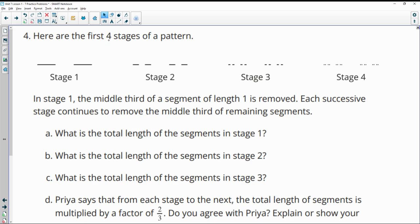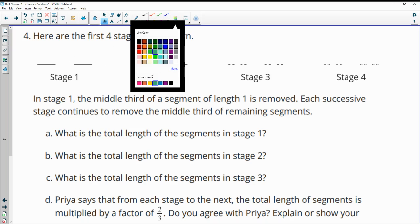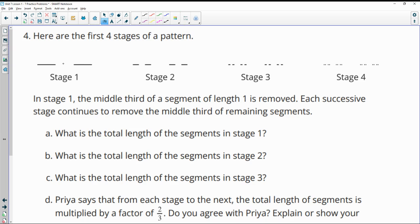Number four, here's the first four stages of a pattern. In stage one, the middle third of a segment length one is removed. Each successive stage continues to remove the middle third of the segment. So we can see that this third is left or is gone. And so it wants to know how long is the total of the segments in stage one. And so if the original was one and we subtracted a third off of it, we would have two thirds left. So this one third is missing, we have two thirds left.